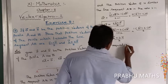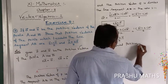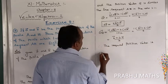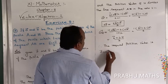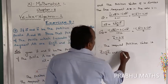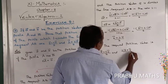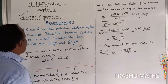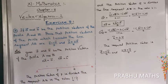Therefore the required position vectors are: the first one is a vector plus 2b vector divided by 3, and the second one is 2a vector plus b vector divided by 3. Hence proved. This is the answer.